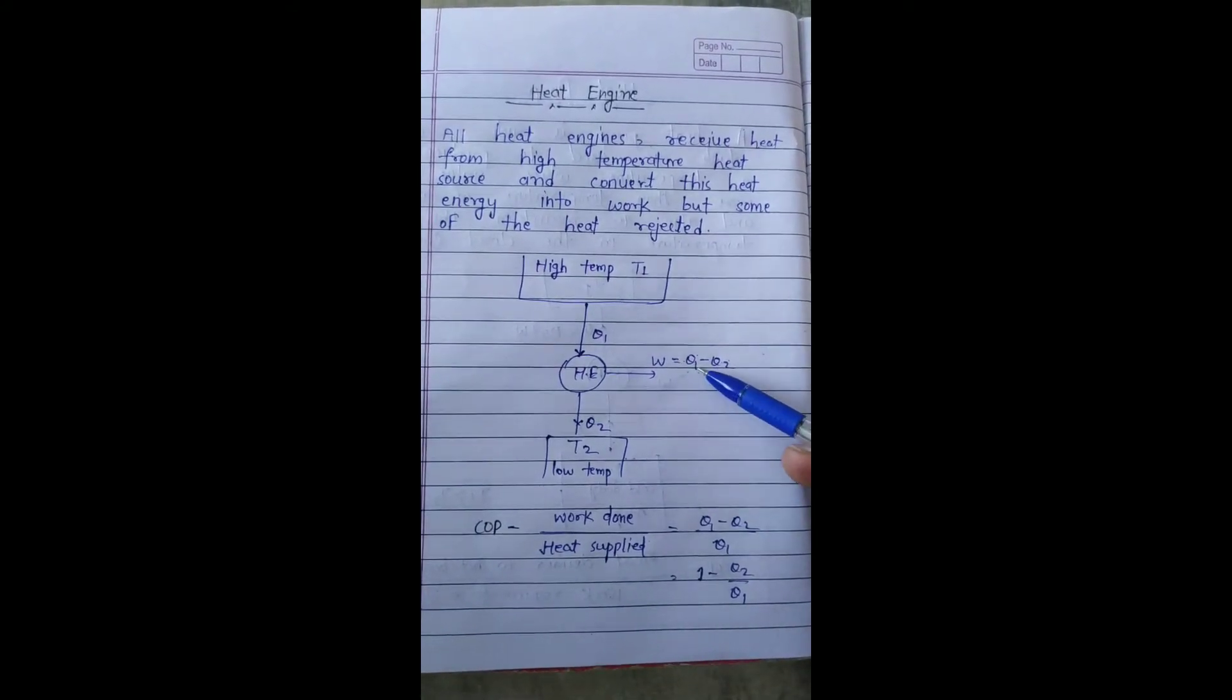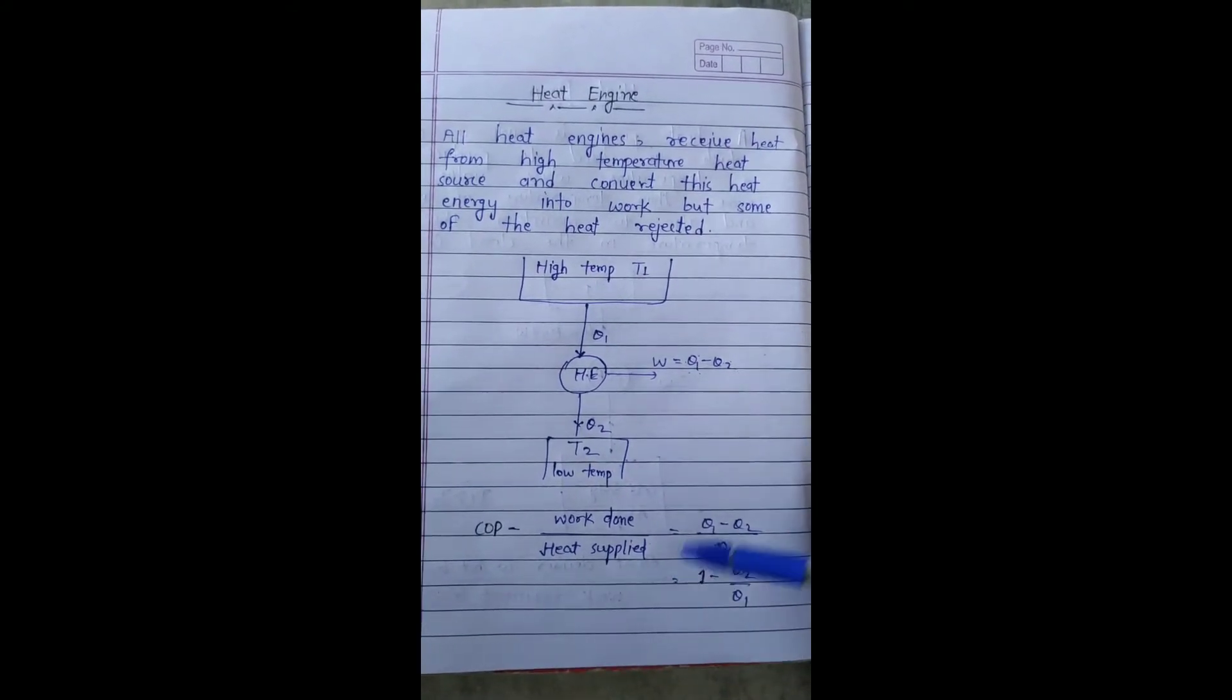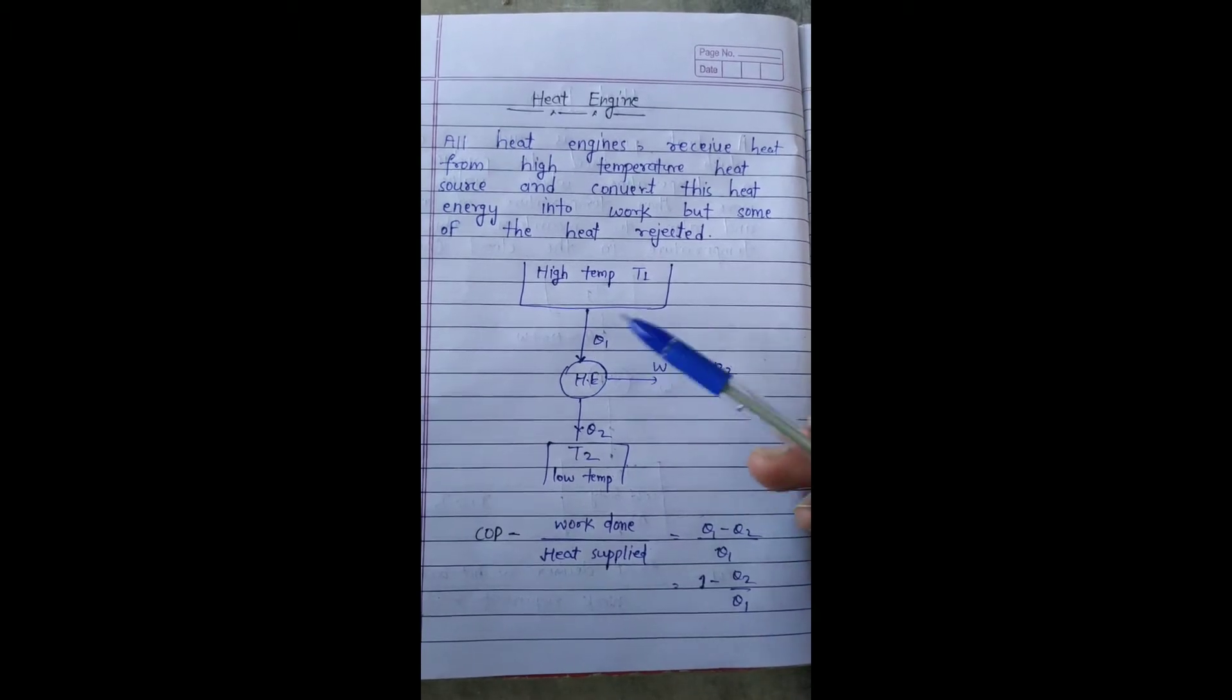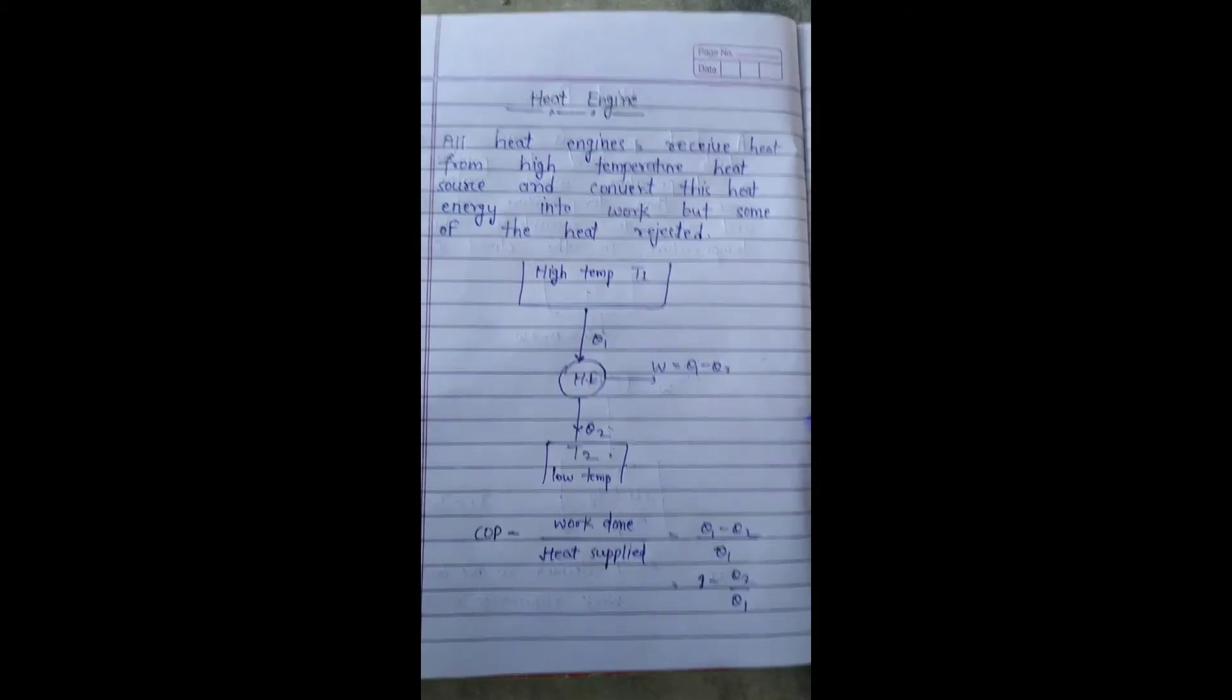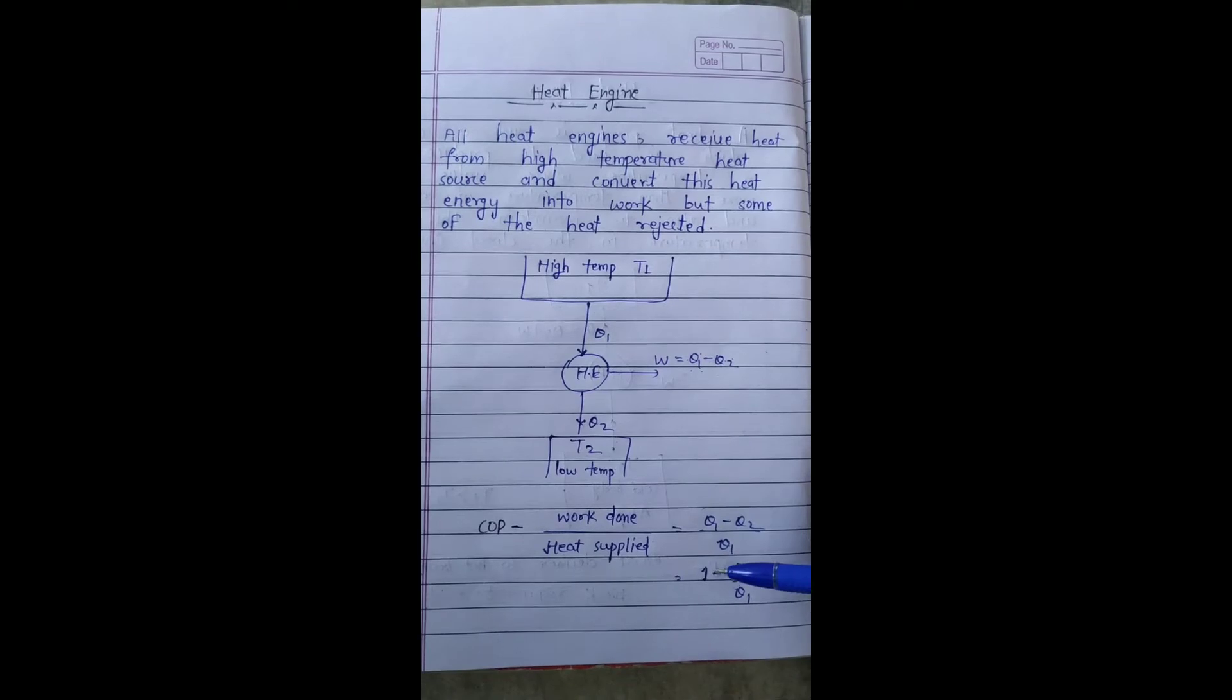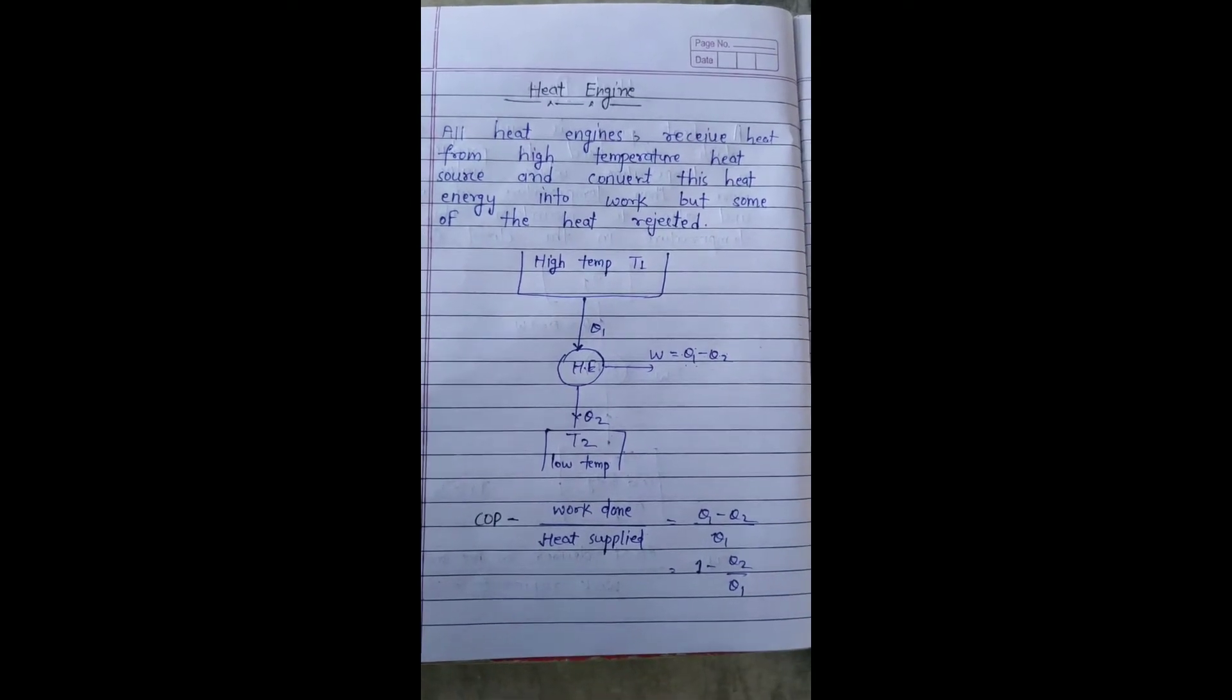So what did we get? Q1 minus Q2. How much did we get the heat? Q1. So what did we get out of our COP? 1 minus Q2 upon Q1.